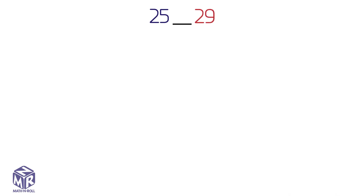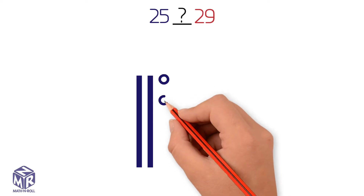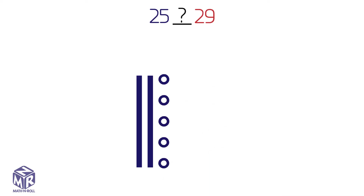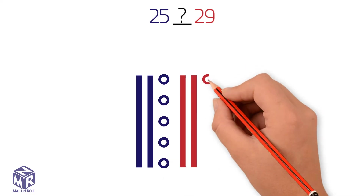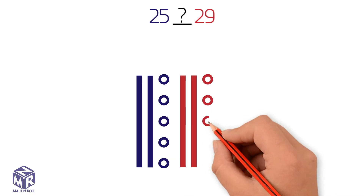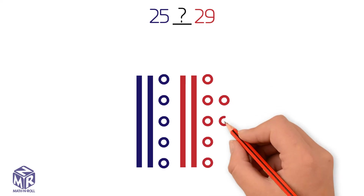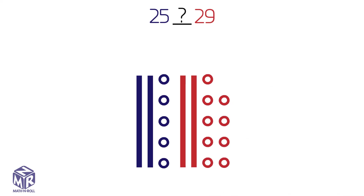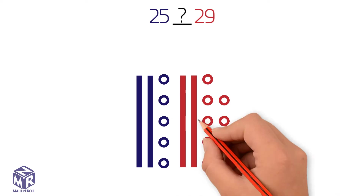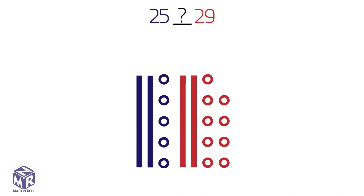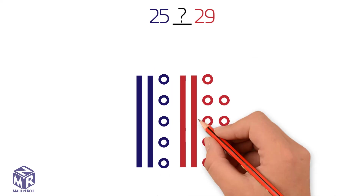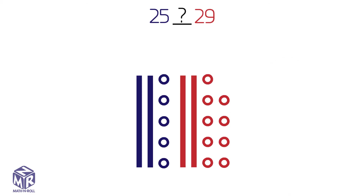Let's try another example. Which is less, 25 or 29? 25 has two tens and five ones. 29 has two tens and nine ones. If the tens are the same, we compare the ones. Five ones is less than nine ones, so 25 is less than 29.